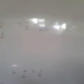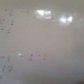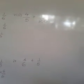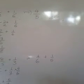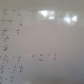Next. 4 fifth added 1 twentieth. 4 and 1 are numerators. 5 and 20 are denominators. 5 and 20. We have to make it into same number.